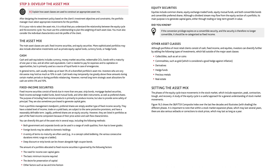From a portfolio management standpoint, preferred shares are simply another type of fixed income security. They have a stated level of income, trade on a yield basis, are subject to the same protective provisions, and have a reasonably definable term. Legally, preferred shares are an equity security; however, they are listed in portfolios as part of the fixed income component because of their price action and cash flow characteristics. You can diversify this part of the asset mix by using both government and corporate bonds in a range of credit qualities from AAA to lower grades, adding foreign bonds to domestic holdings, using a variety of terms to maturity (such as laddering), and choosing deep discount or strip bonds alongside high coupon bonds.